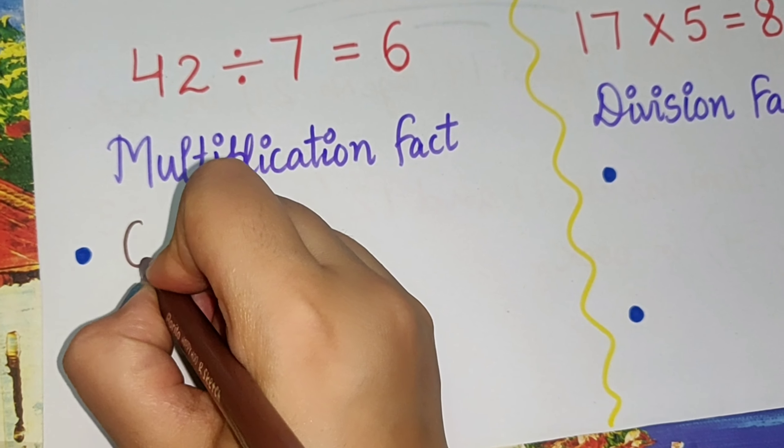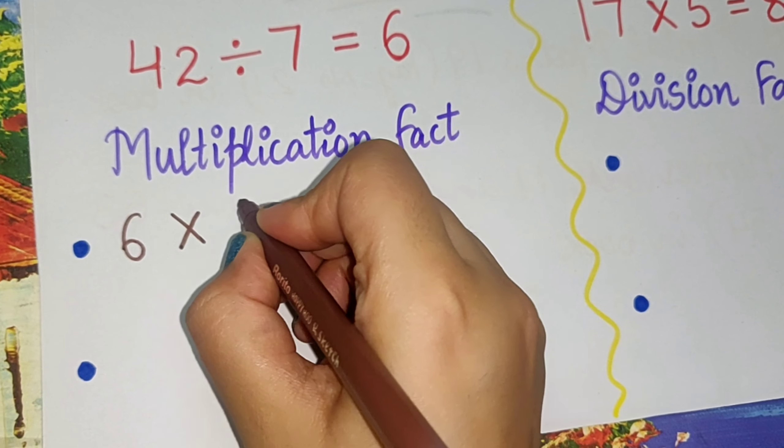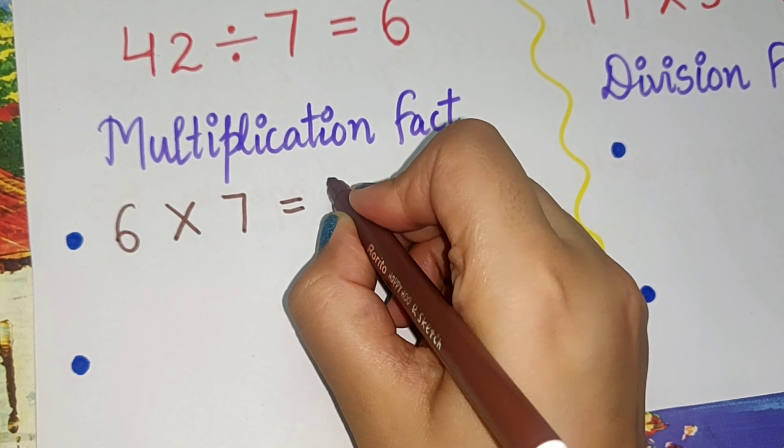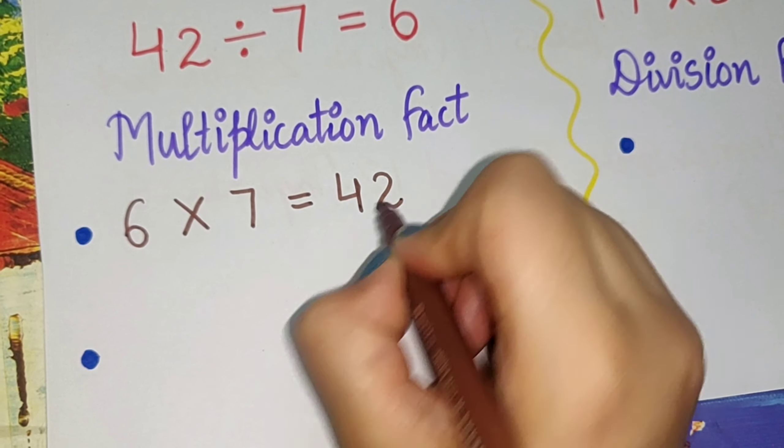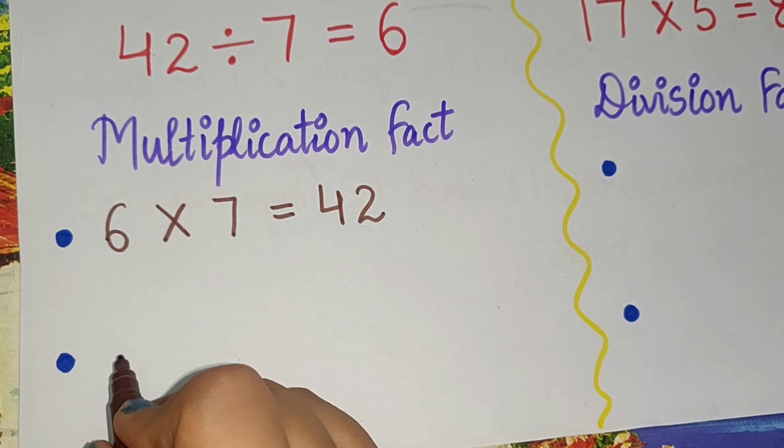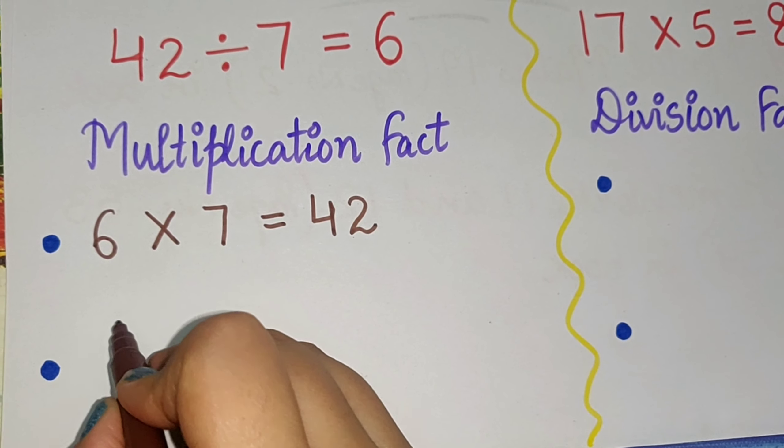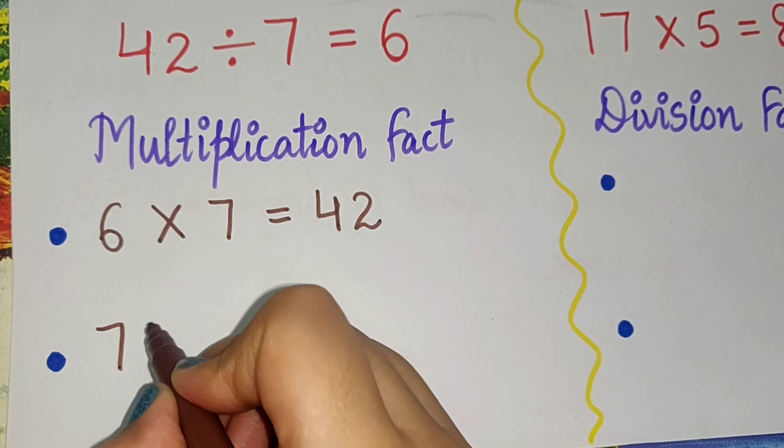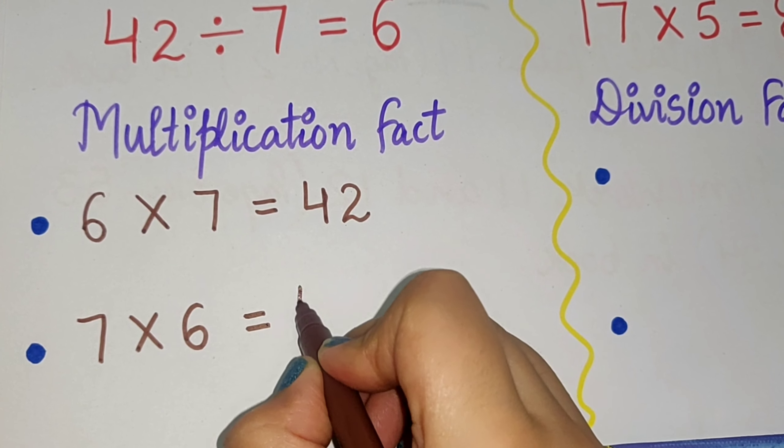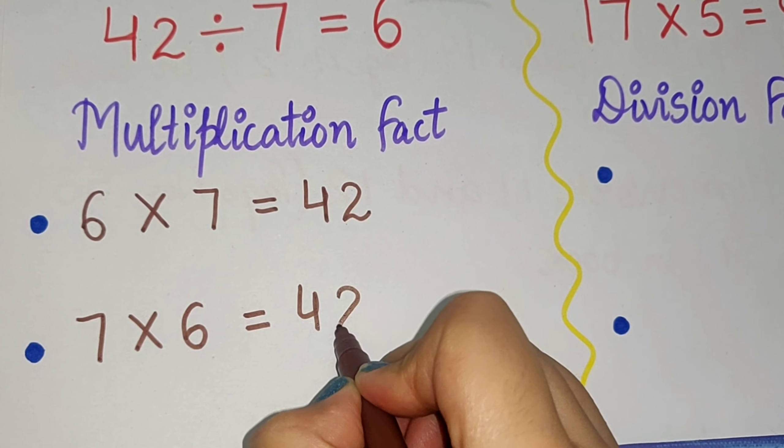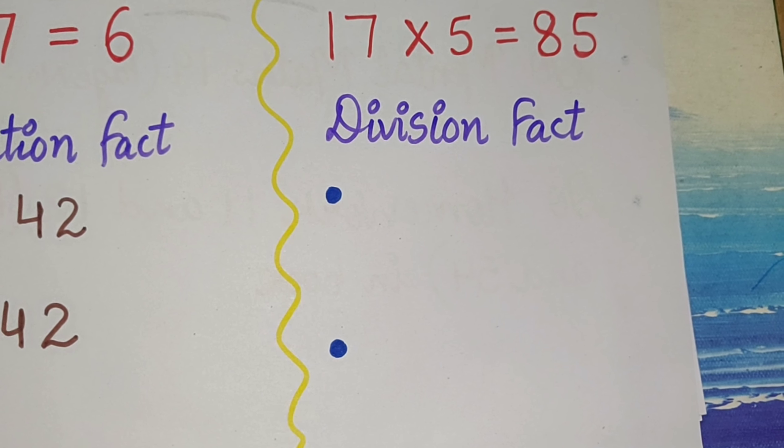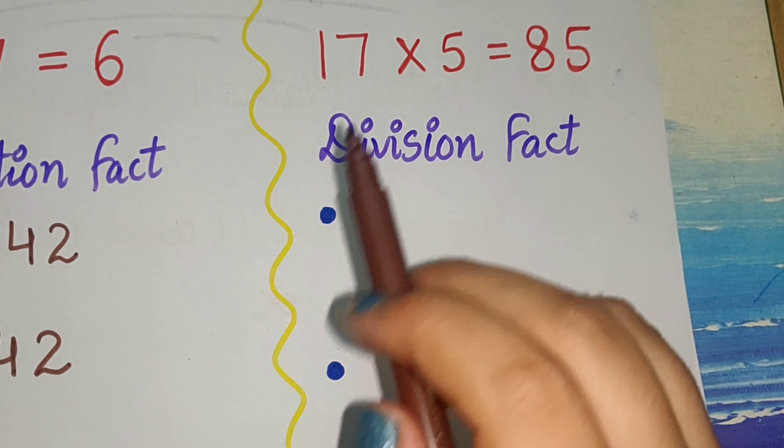And the second way to write the multiplication fact, we just change the positions: 7 times 6 equals 42. By this also we will get 42.